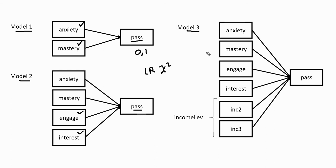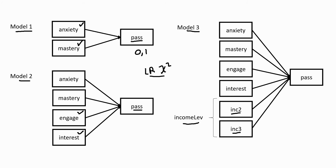We also have Model 3, in which we add income level as a predictor of the probability of a student passing. In our data set, income level is a factor variable, so it needs to be recoded into binary predictors. Income level is coded 1 for low income, 2 for medium income, and 3 for high income. Because we have three categories, we'll recode that variable into two binary variables called INC2 and INC3. We'll then use the likelihood ratio chi-square test to determine whether adding the income level variables results in a significant improvement in fit from Model 2 to Model 3.